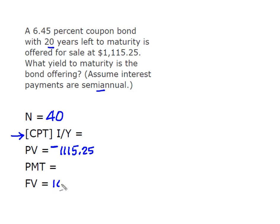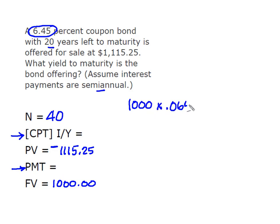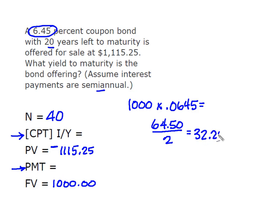We know our future value is simply that par value of $1,000. We need to calculate our payment. So remember we go back to our coupon rate — we take the face value of the bond times 6.45%, which gives us a payment of $64.50, but they're semi-annual payments, so I'm going to divide it by 2, giving me a payment of $32.25.